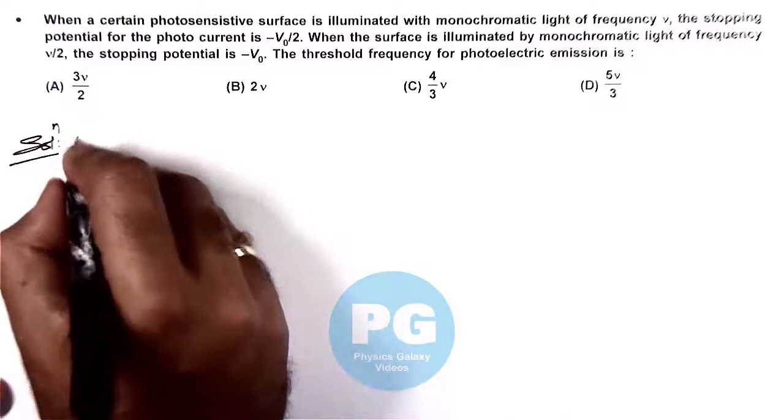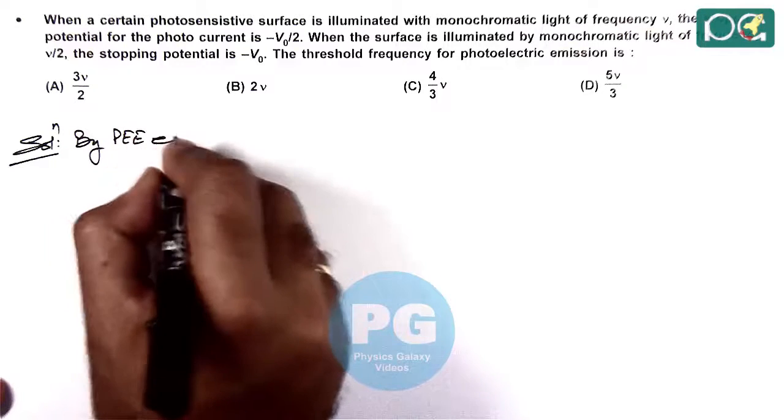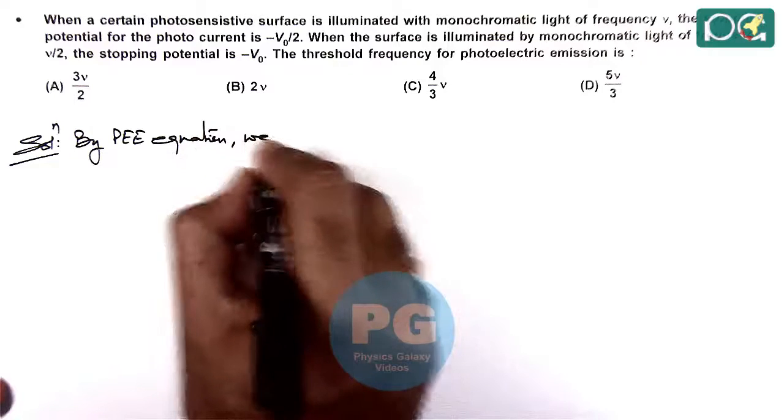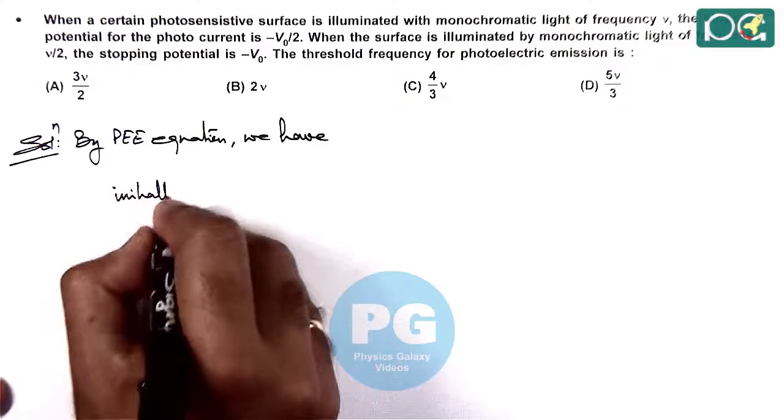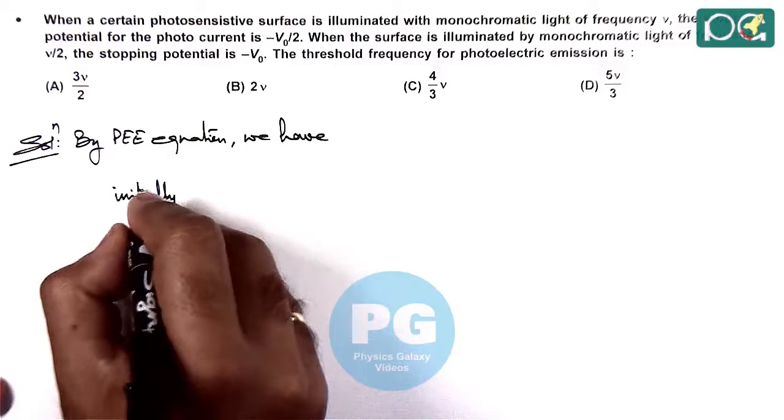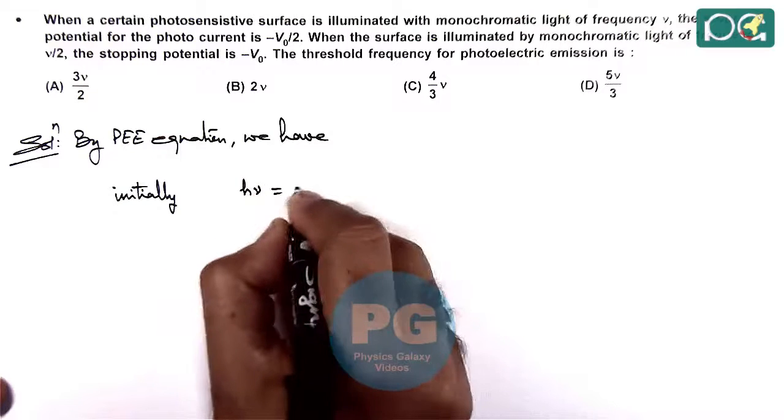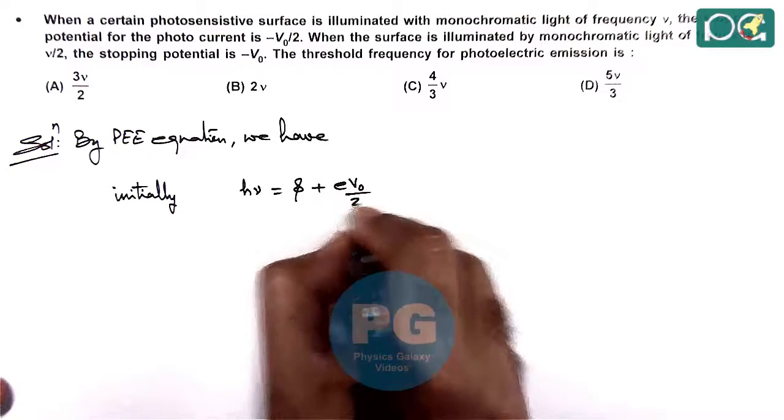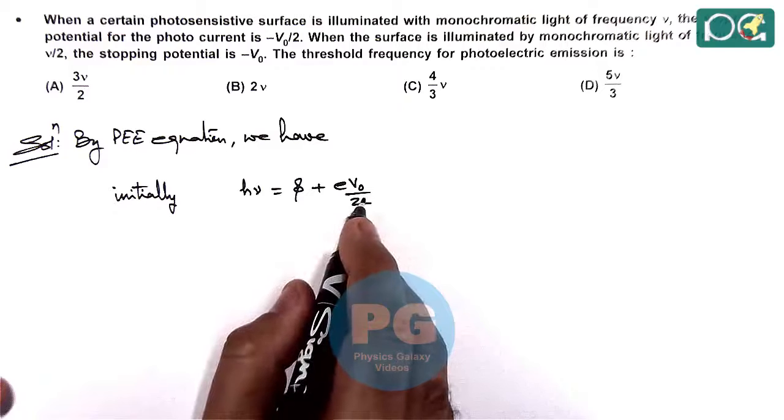By the photoelectric effect equation, we have initially when the incident frequency is nu, we write H-nu equals the work function phi plus E-V-not by 2, which is the maximum kinetic energy of ejected electrons.